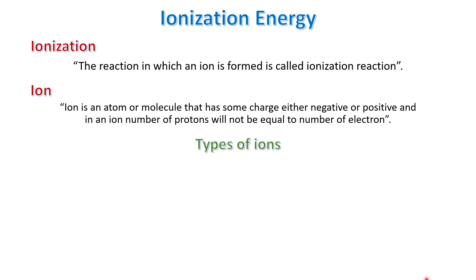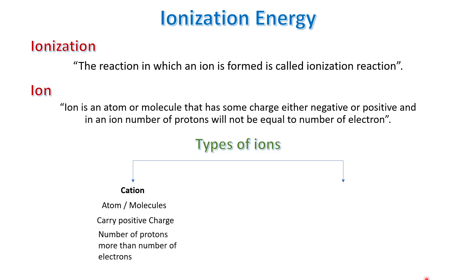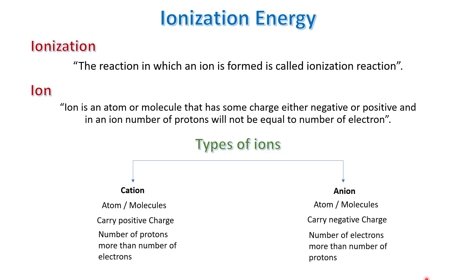There are two types of ions according to their charges. A cation is an atom or molecule that carries a positive charge, and the number of protons in the nucleus will be more than the number of electrons. An anion is a species that carries a negative charge, and the number of electrons will be more than the number of protons. In a neutral atom, the number of protons in the nucleus equals the number of electrons.